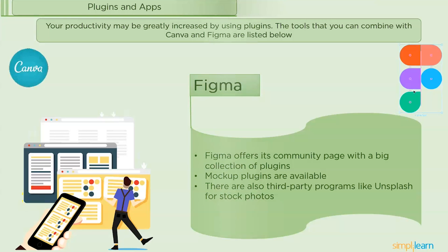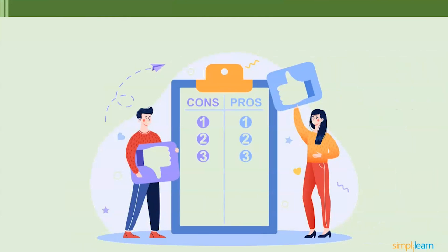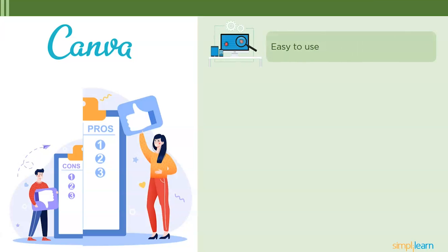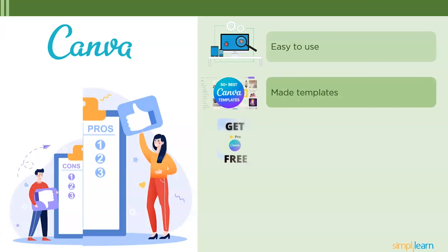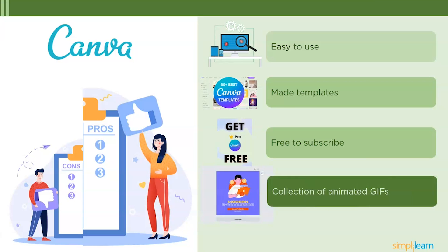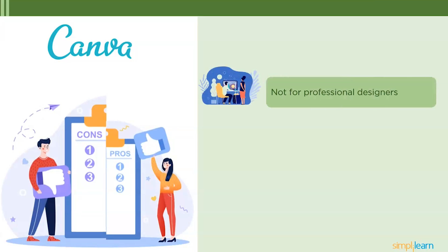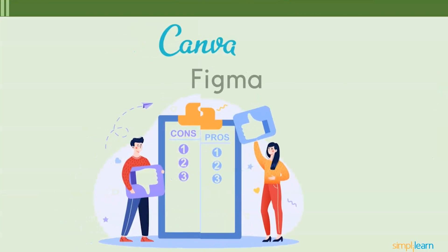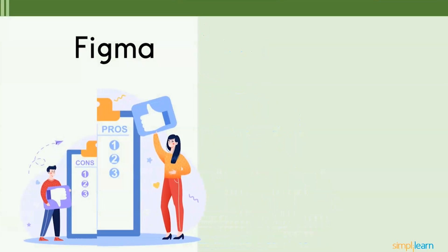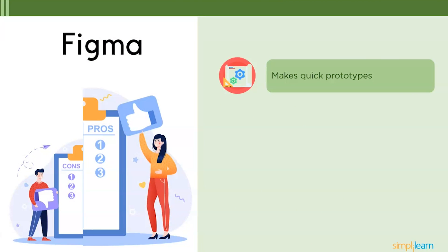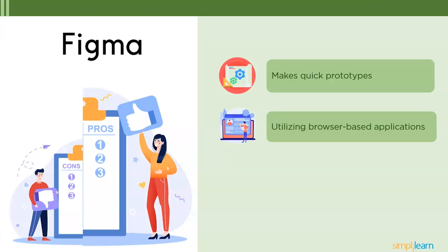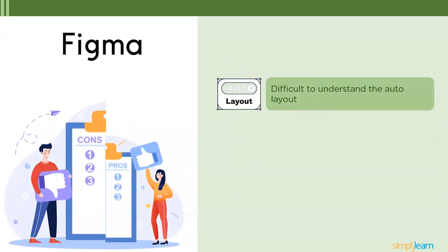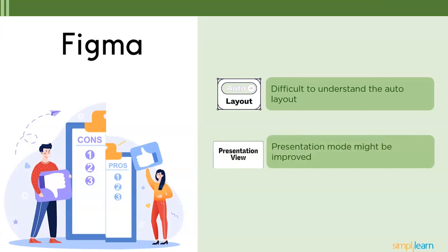After the comparison, we will discuss the pros and cons for Canva and Figma. Some pros for Canva are: the software is easy to use with amazingly made templates, it's free to subscribe, and there is a collection of animated GIFs. Some cons are: it is not ideal for professional designers, and there are not many free templates readily available. For Figma, some pros are: it makes quick prototypes and presentations possible, utilizes browser-based cloud data storage, and works well for design and graphics. Some cons are: the auto layout is difficult to understand, and the presentation mode could be improved.